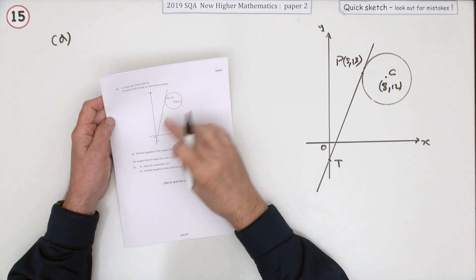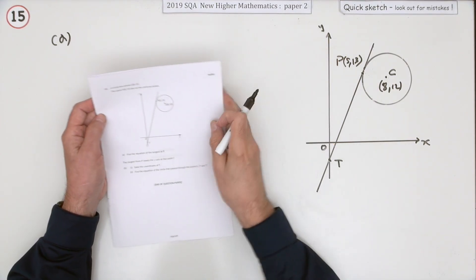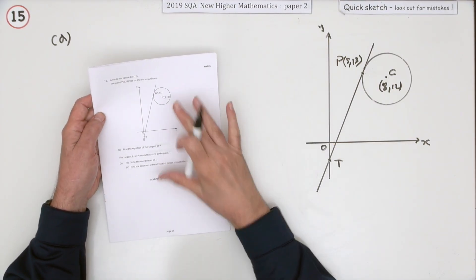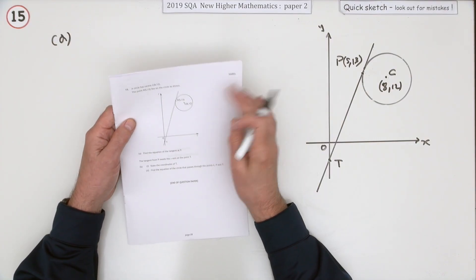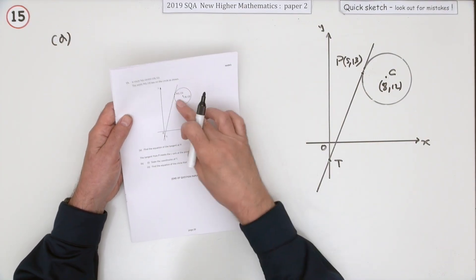And so number 15, the last question in paper 2 of the 2019 Higher Maths. Now usually this question is a sort of tricky question you need to think about a bit, but there seems to be a standard approach. Look what it says here.